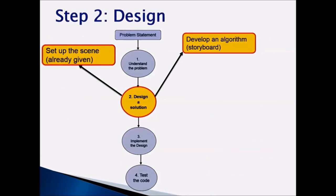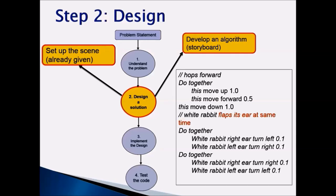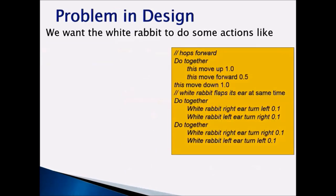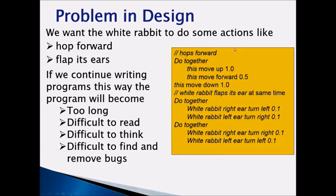Let's take a look at Step 2: Design. When we talk about a solution, we need to first set up the initial scene, which is already given to you. The next thing is to develop an algorithm, as we have done traditionally in Chapter 1. The problem with this design is if we continue writing programs this way, the program will become too long, difficult to read, and difficult to think and analyze.